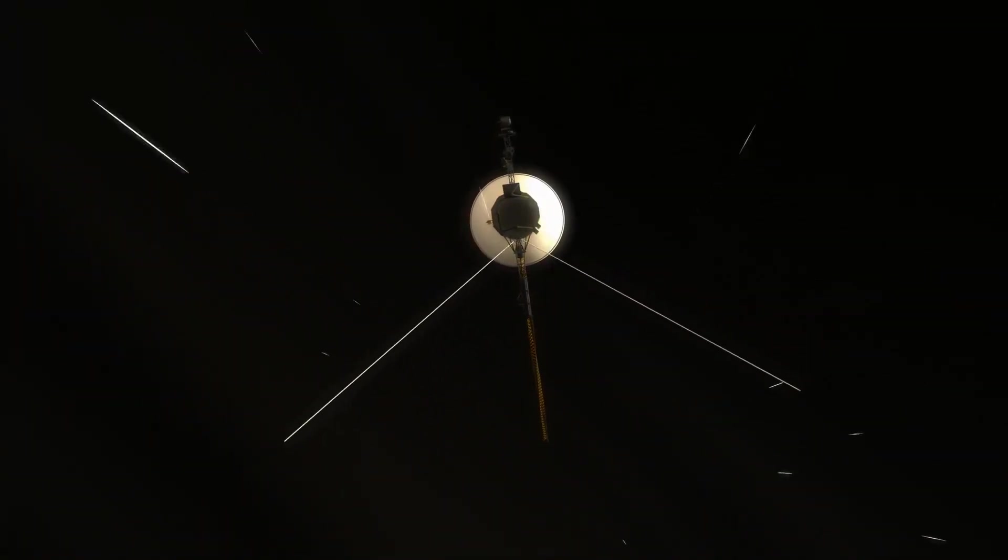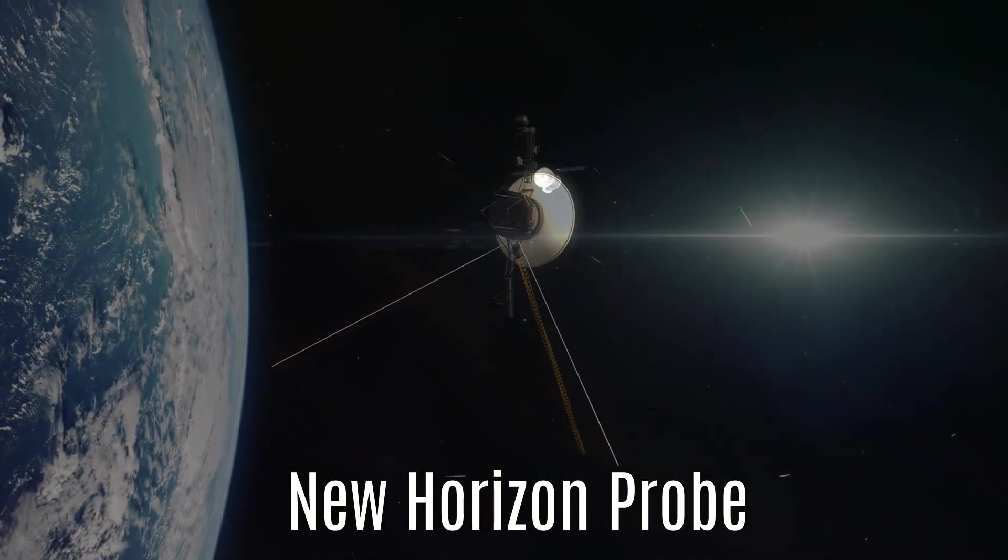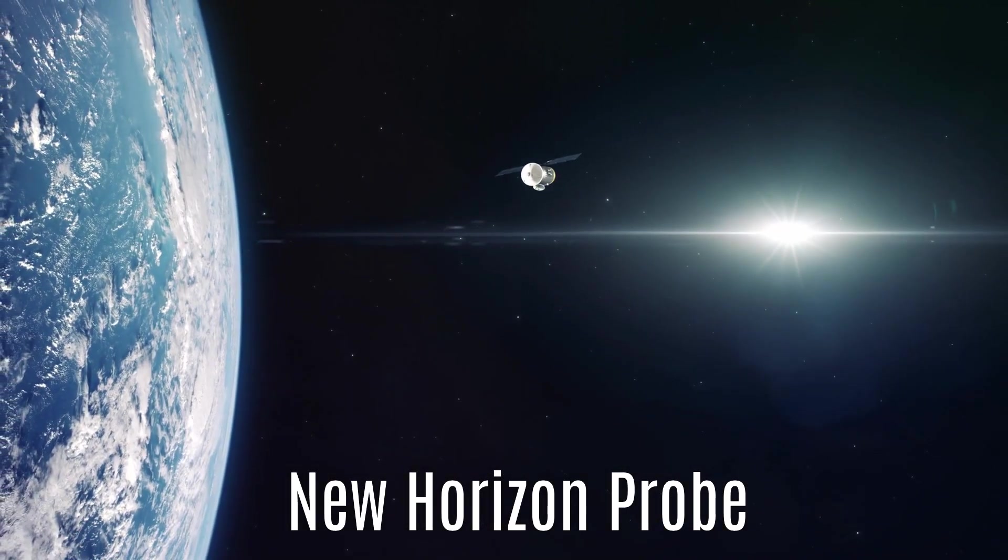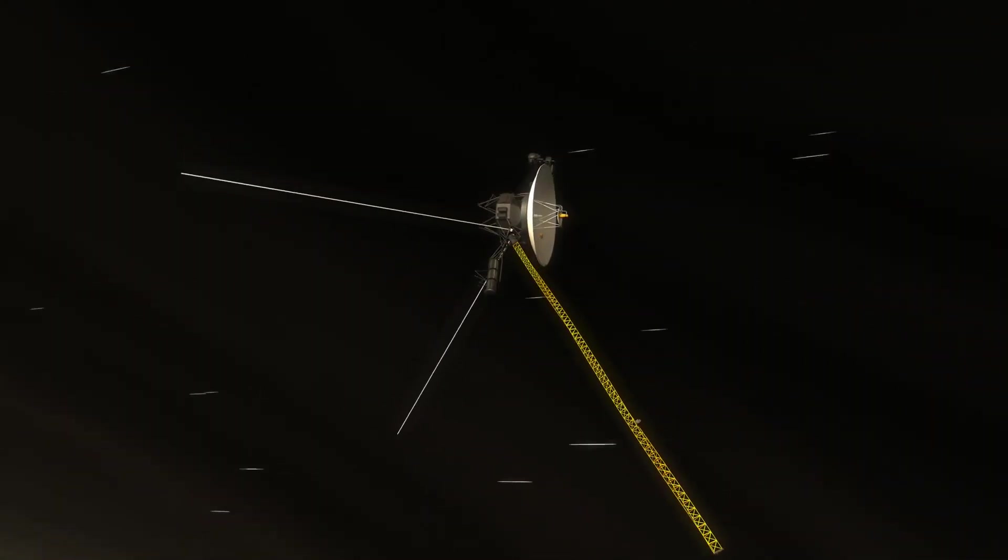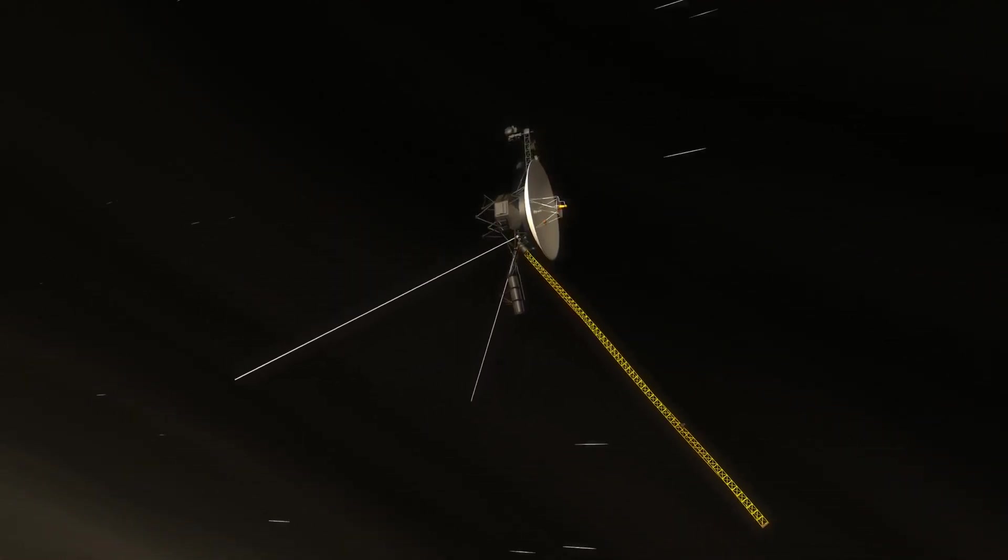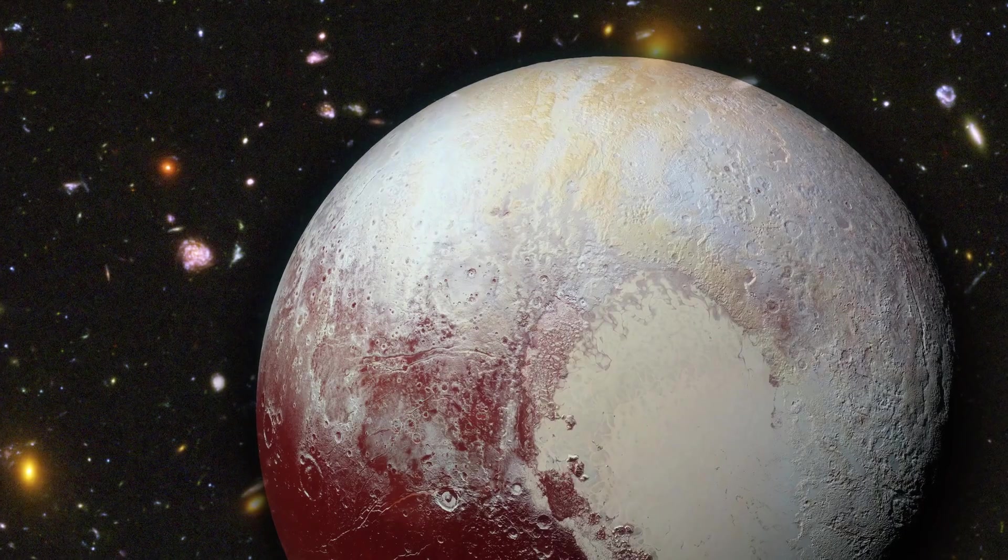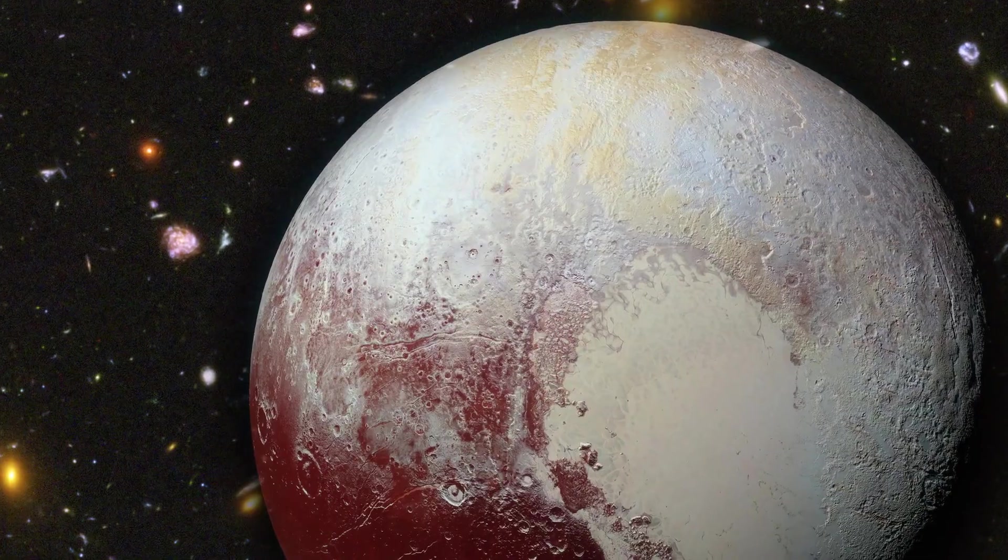Back in 2006, we launched New Horizons, the fastest probe ever, zooming it toward Pluto. Pluto's a mere 2,000 times closer than a light year. New Horizons raced through space at a whopping 36,000 miles per hour, and it still took 10 years to reach Pluto.